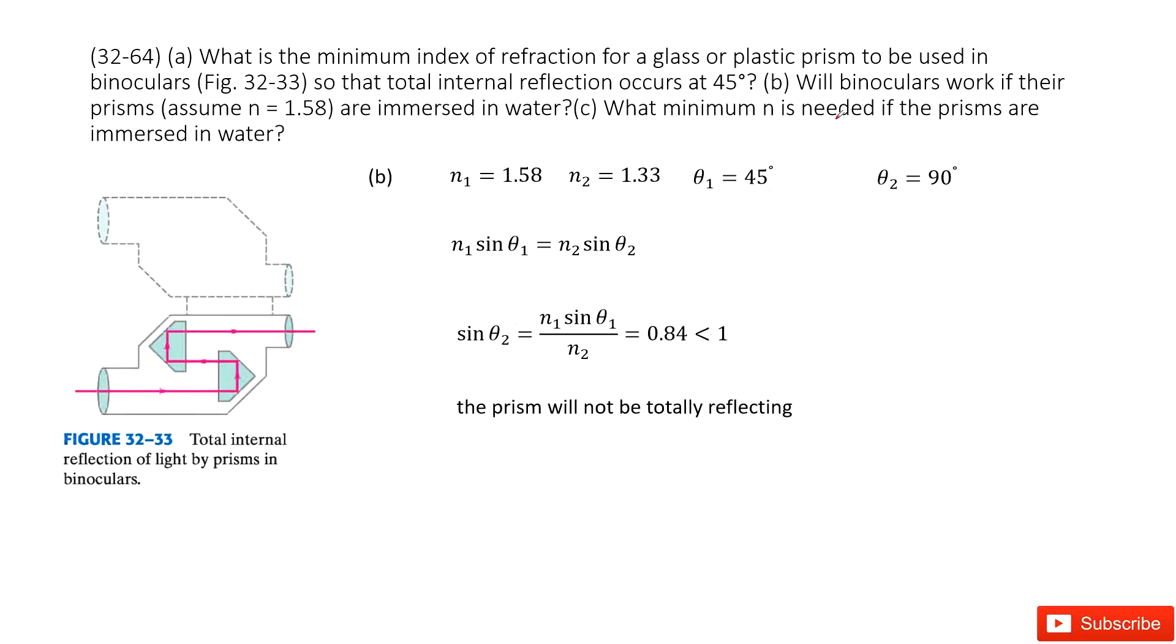The second case is: what if this object is surrounded by water? When it is surrounded by water, n2 changes. Now it changes to n2 equals 1.33, and the index for this object becomes 1.58.